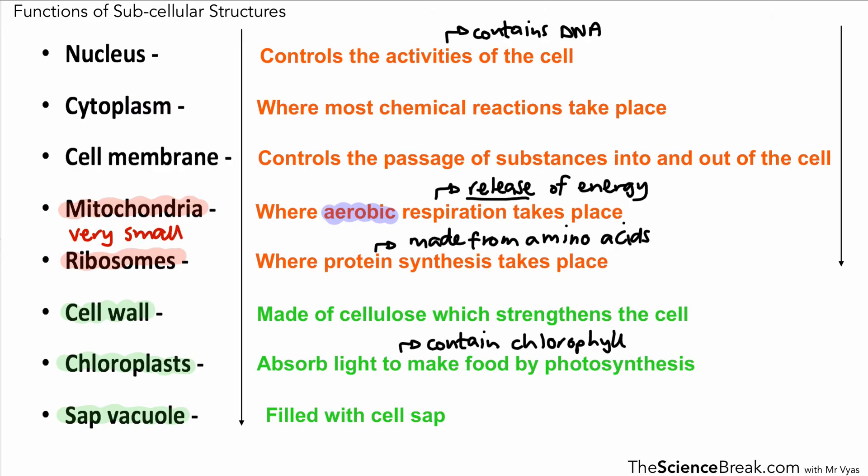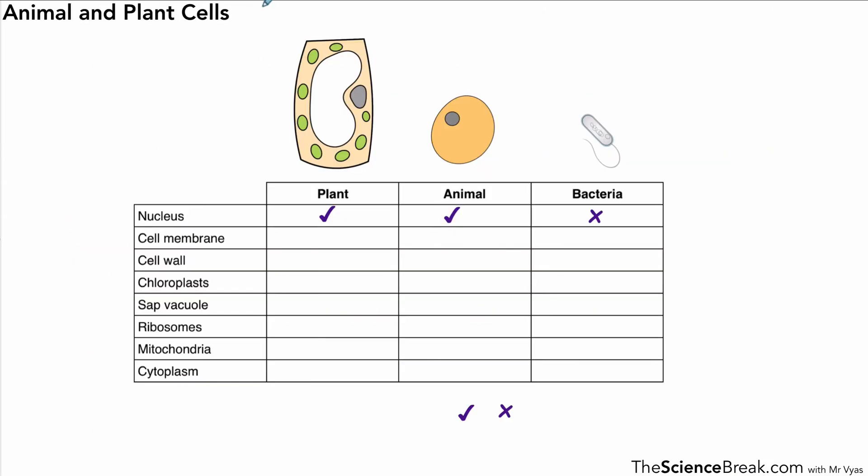Here is another way we can test ourselves. What you might want to do is put ticks in the column and crosses to show whether the part is present in our plant, animal, and bacteria. Remember the bacteria we were also calling prokaryotes. For the plant we have a nucleus, a cell membrane, a cell wall, we have chloroplasts, and in actual fact we have all eight parts that are listed there.